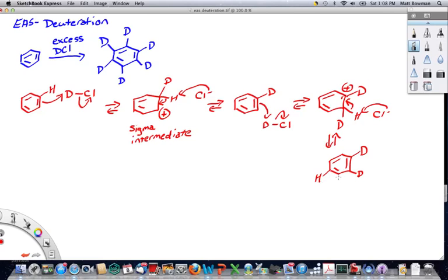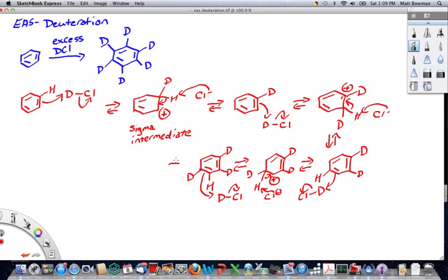Two deuteriums. Then we can replace another hydrogen, then another hydrogen, and another one. We can see how the process just repeats itself again and again until all the hydrogens have been replaced with deuteriums.